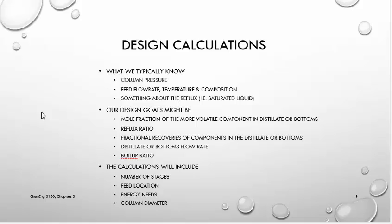As I try to meet these goals, what I'm really looking for in those calculations is how many stages I need, where I want to introduce the feed — in the middle, slightly above or below the middle, or at the very top or bottom — and the energy needs, because that's going to relate to operating cost. And then the column diameter — how wide I need the column to be — which relates primarily to vapor flow rates.